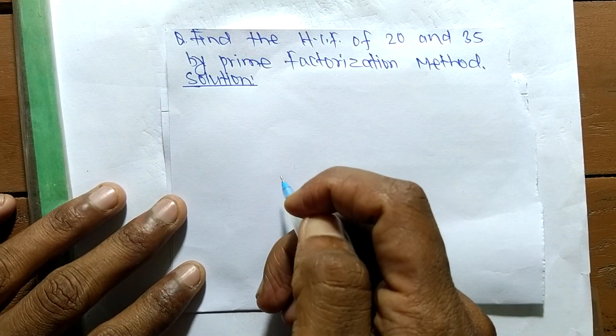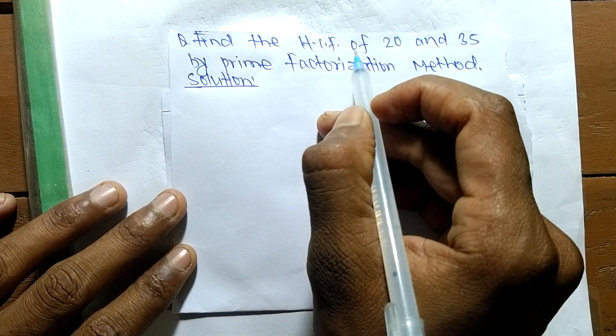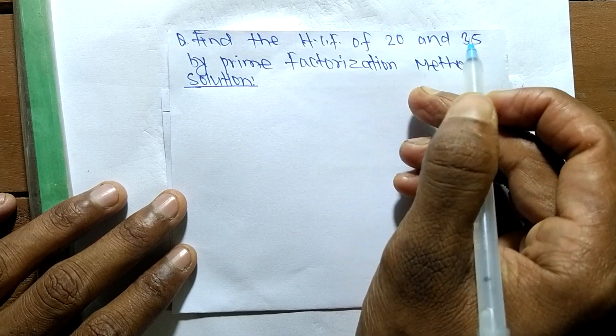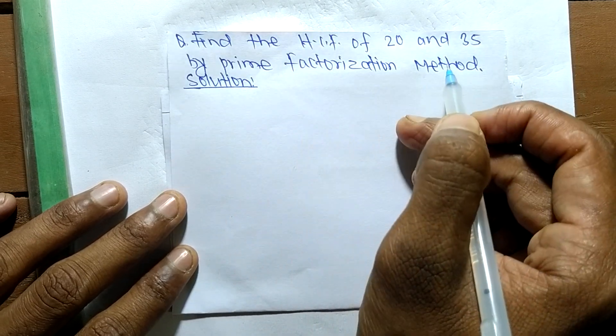Today in this video, we shall learn to find the HCF of 20 and 35 by prime factorization method.